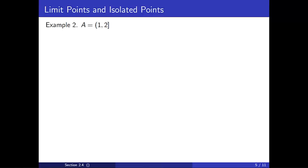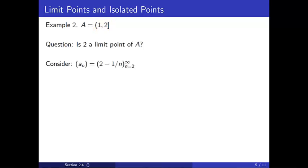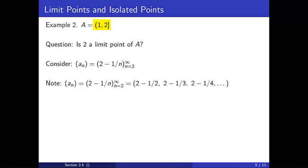For our second example, let A be the interval from 1 to 2, including 2. Is 2 a limit point of A? If we think so, we must find a sequence of points in A, excluding the number 2, which converges to 2. Our sequence will have to contain numbers between 1 and 2 but converging to 2. How about the sequence a_n = 2 − 1/n, starting with n = 2? The first term is 2 − 1/2, then 2 − 1/3, 2 − 1/4, etc. Each term lies in A and the sequence converges to 2. Therefore, 2 is a limit point of A.